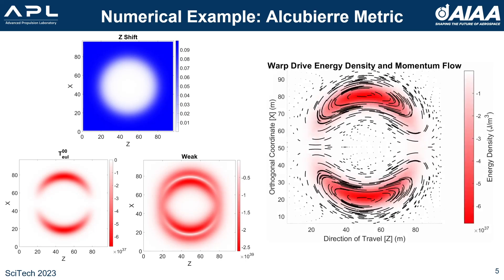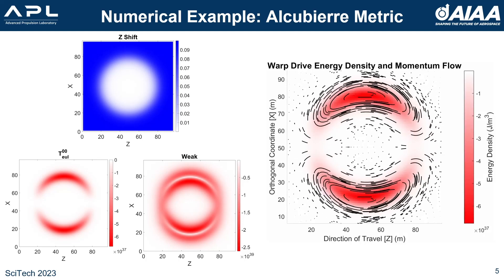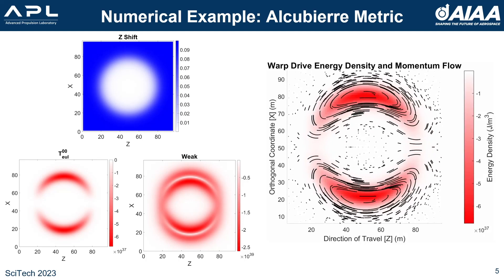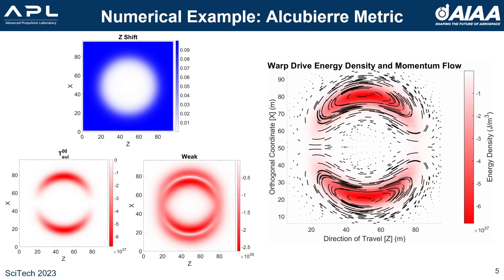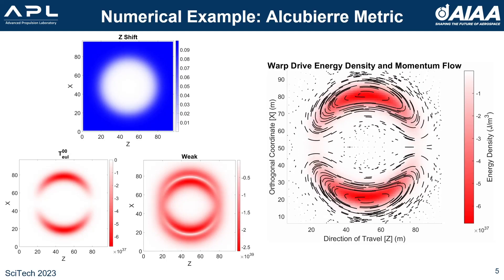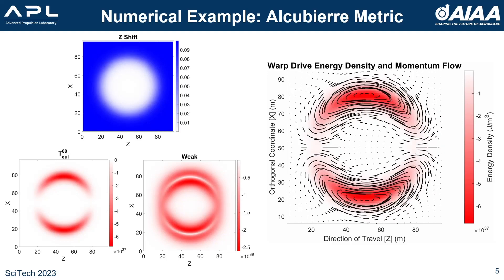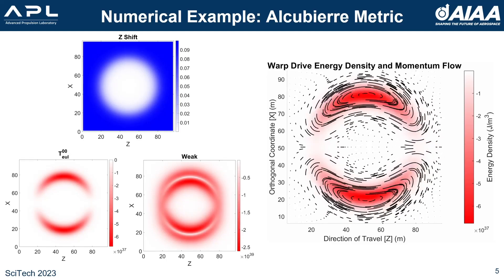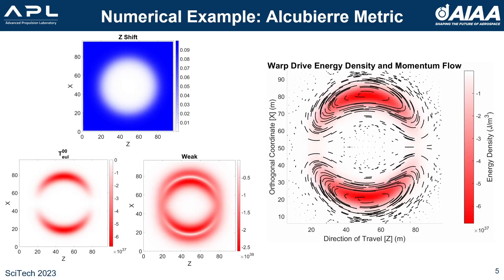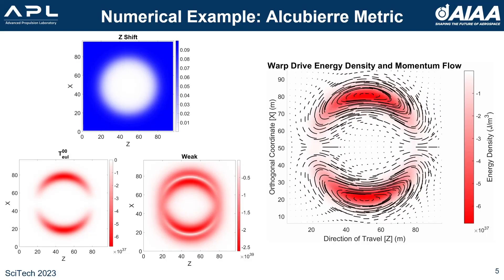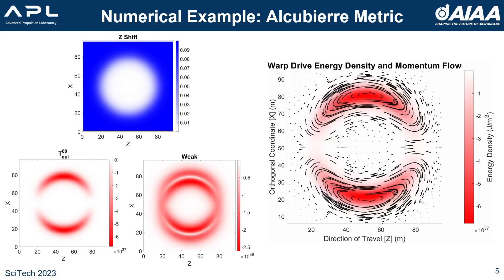Another cool feature of warp factory is providing unique visualizations of the stress energy tensor components. On the right is an animation of the momentum flow lines for the Alcubierre metric. What you're seeing are the different terms of the momentum flow components as a vector field, with the flow lines showing the motion of energy in the warp bubble. This shows an interesting feature of this warp drive, which is a circulation effect around the regions of highest energy density.